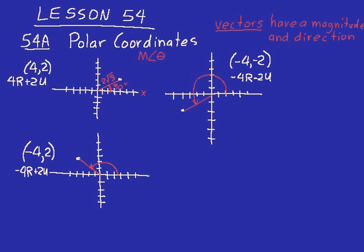Something else to notice: we can make a right triangle relative to the x-axis for each of these magnitudes and points. Look at the bottom left one — if I draw a line right there, we have a right triangle. And over here on the top right one, if I draw a vertical line, we have that right triangle there. In this lesson, you'll be taking polar coordinates and converting them back to rectangular coordinates. You'll have to use some trig and set up right triangles to do that.